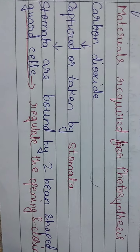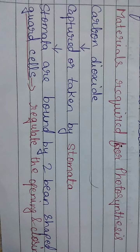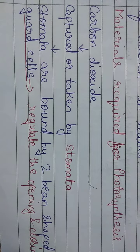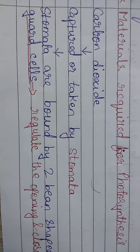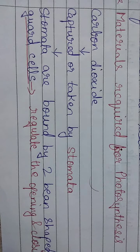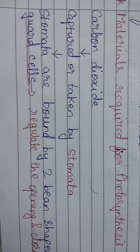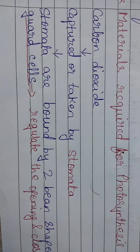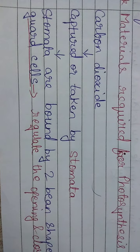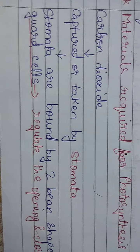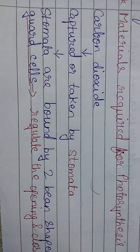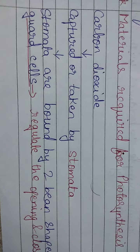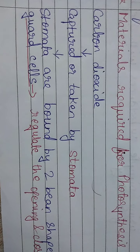Now let us see what are the materials required for the process of photosynthesis. The first component or material is carbon dioxide. Plants need carbon dioxide, which is combined with water and formed into glucose, oxygen, and water.